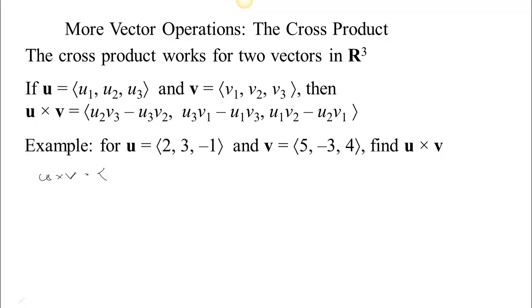First it says u₂v₃, so that would be 3 times 4, that's 12, minus u₃v₂. u₃ is negative 1, v₂ is negative 3, so that product is 3, so we have 12 minus 3. Now the next entry, u₃v₁, so negative 1 times 5 would be negative 5, minus u₁v₃. 2 times 4 is 8, so negative 5 minus 8.